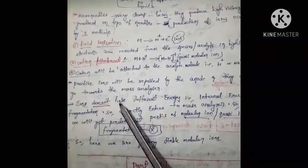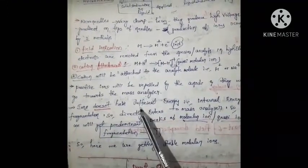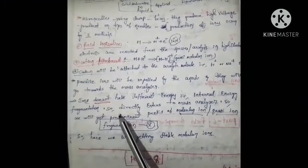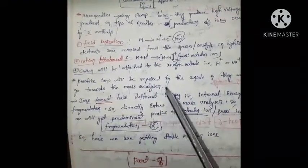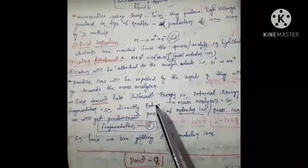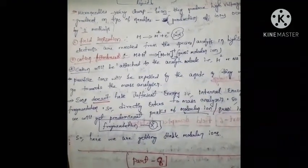Whether ions are formed by field ionization or cation attachment, they do not have sufficient internal energy, so fragmentation does not occur. Without fragmentation, these ions directly enter the mass analyzer. We therefore get predominant peaks of molecular ion or quasi molecular ion. The most important point is that fragmentation is absent, and we obtain stable molecular ions.